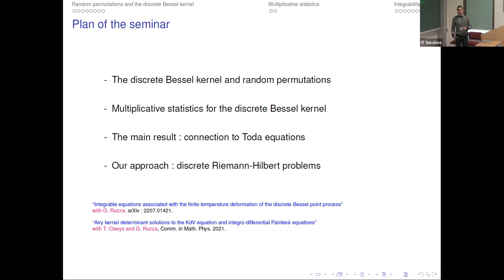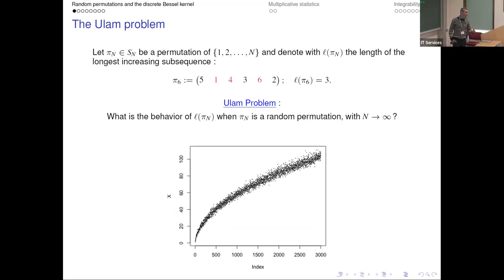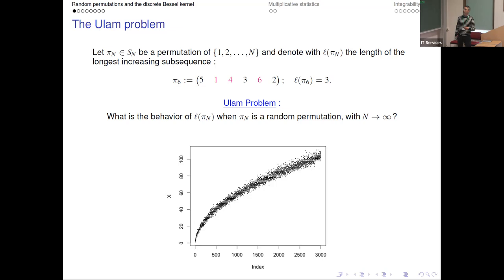So what is this discrete Bessel kernel and how does it appear? Suppose you take a random permutation of the integers from 1 to n and denote by L(π_n) the length of the longest increasing subsequence. I put uniform measure on the space of random permutations of size n, and I ask what is on average the length of the longest increasing subsequence. For instance, here we have a permutation where the length is three — one, four, and six — and I'm interested in studying the behavior of this length when n goes to infinity.